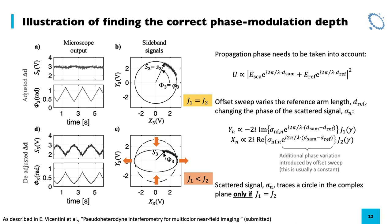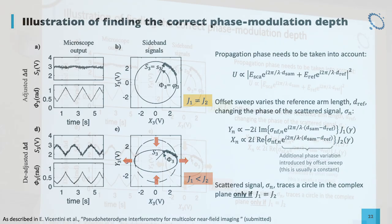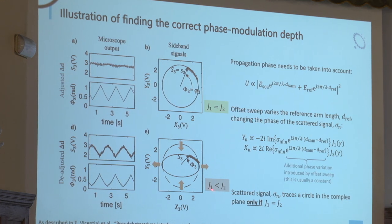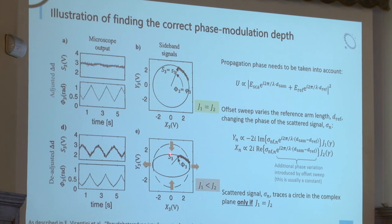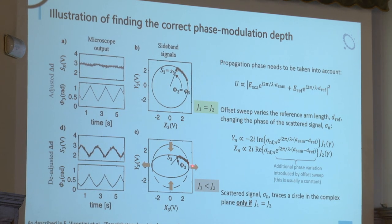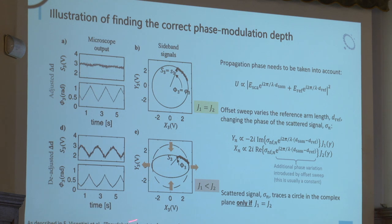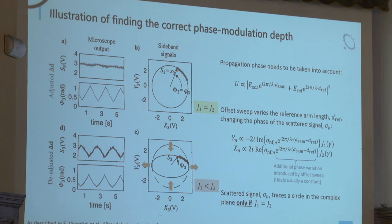This circular arc is only expected if the system is aligned — meaning J1 equals J2. If that is not the case, you get an ellipse instead of a circle. For example, if J1 is smaller it controls the imaginary part and squishes the circle, while if J2 is larger it extends the circle, giving an ellipse. If you then do the offset sweep around this arc, you get a modulation in the amplitude. So by looking at the offset sweep in the complex plane, we can immediately see whether our system is calibrated and aligned.